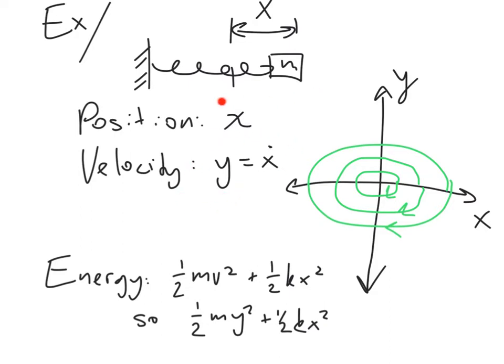A fact about this spring is there's no friction in the system, so energy is conserved. The energy of the spring is its kinetic energy, which is 1/2 m v squared, or for us 1/2 m y squared, because y is the velocity.